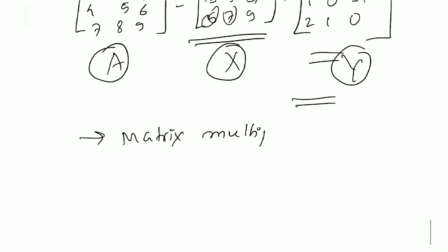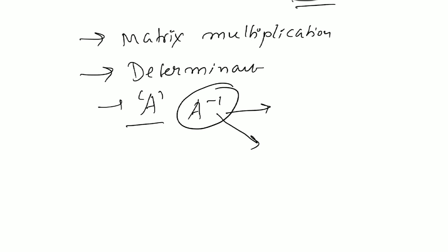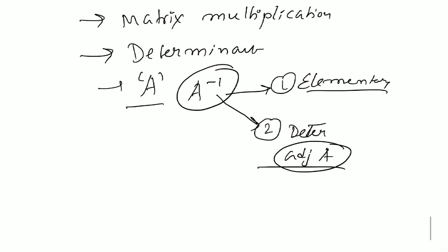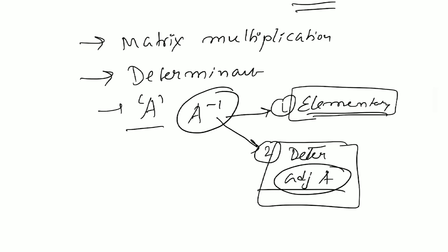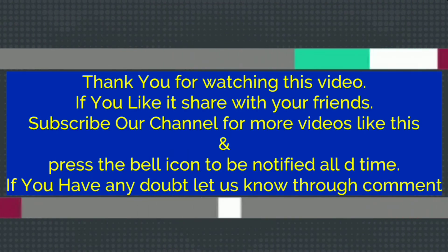On the next video we will see more examples on matrix multiplication including 3×3 matrices, and we will also learn determinants. Further we will learn the inverse of a matrix, which can be found in two ways: elementary operations and the determinant method. That's it for today — if you liked our video please share and subscribe. If you have any suggestions or problems, comment below. See you in the next video, thank you.